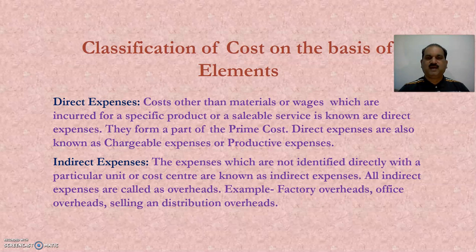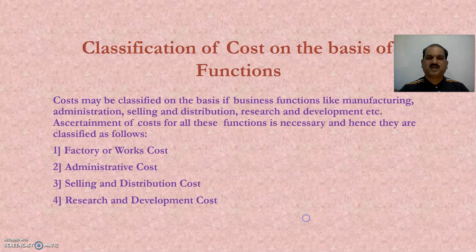Indirect expenses: the expenses which are not identified directly with a particular unit or cost centre are known as indirect expenses. All indirect expenses are called overheads. That is, the aggregate of indirect material, indirect labour and indirect expenses are known as overheads. For example, factory overheads, office overheads, selling and distribution overheads, etc.